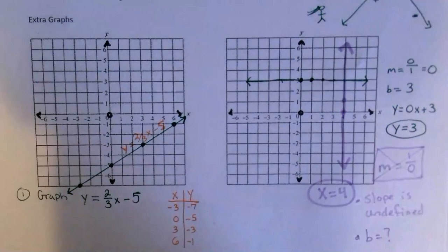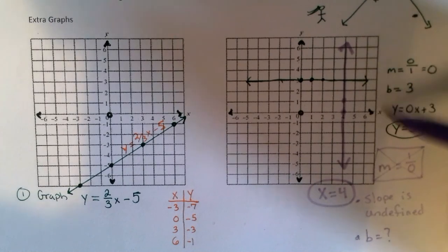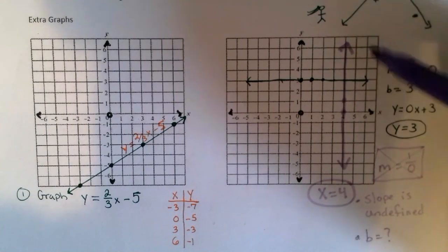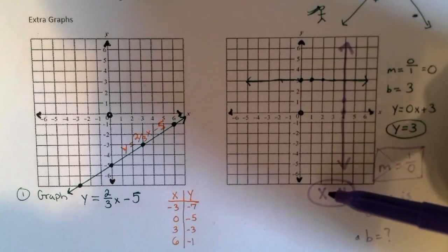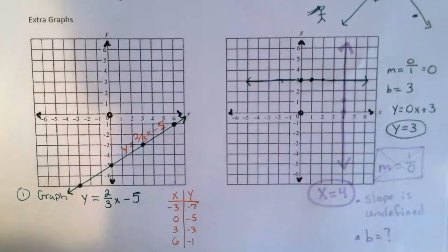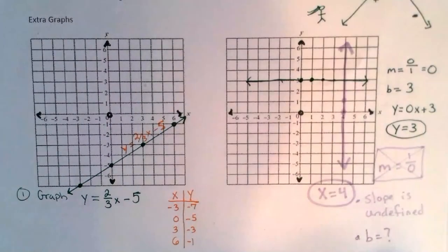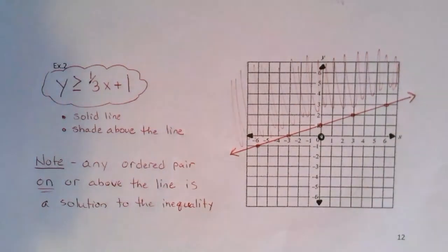That might come up in an entrance task tomorrow. To summarize: a flat horizontal line has zero slope and is written y equals a number; a vertical line has undefined slope and is written x equals a number — it's the only form that can't be written as y equals mx plus b. Go ahead and try page 13 tonight — four inequalities to graph. I'll check in with you guys tomorrow. Have a good day.